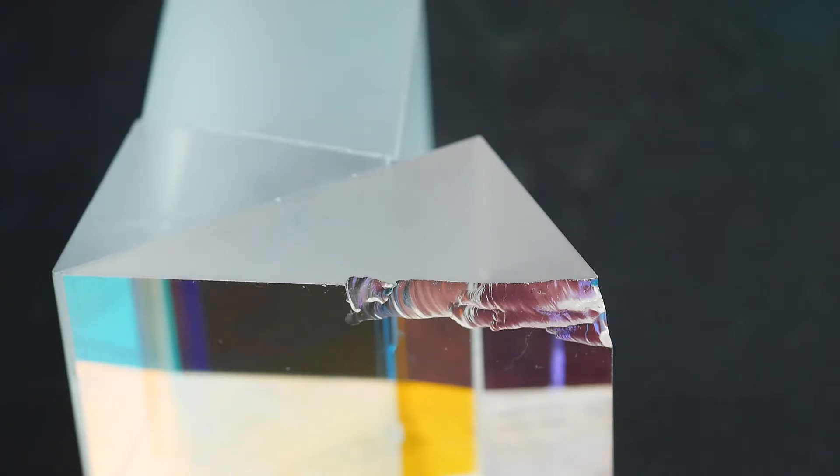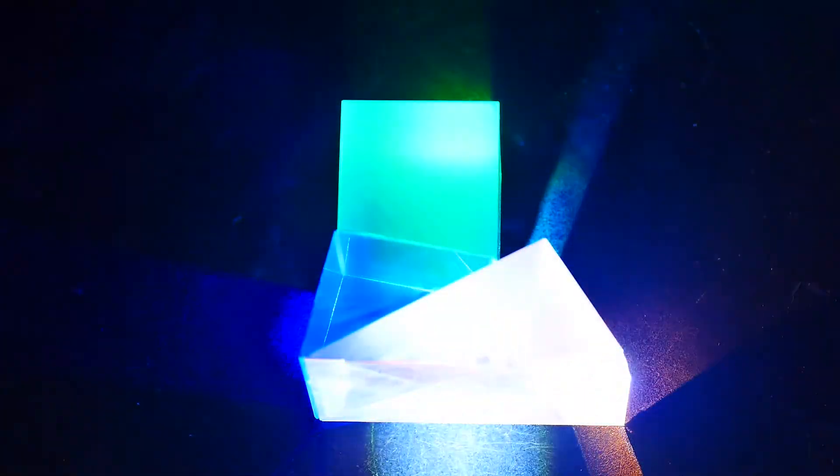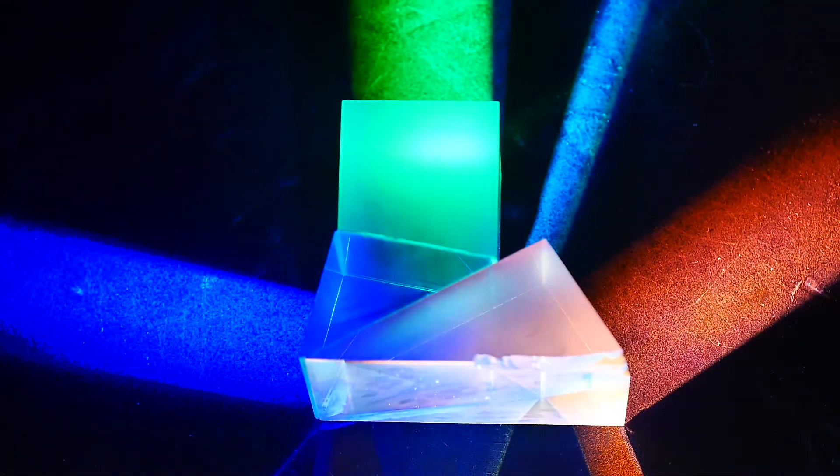Anyway, it has dichroic filters in between the different prism faces. Let's shine a white flashlight into the entrance of the prism, and we can see that it breaks up into red, green, and blue.